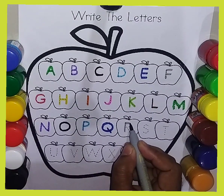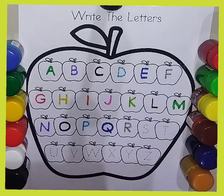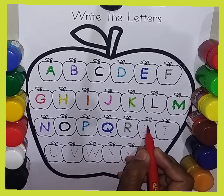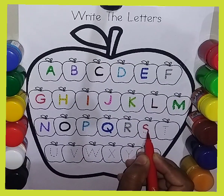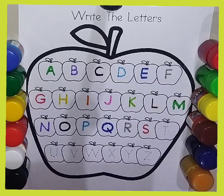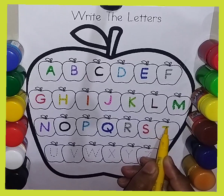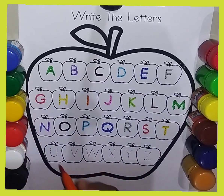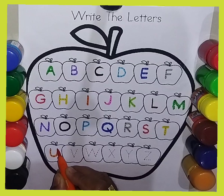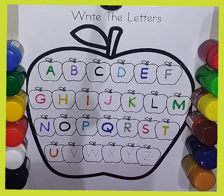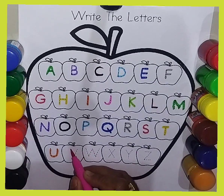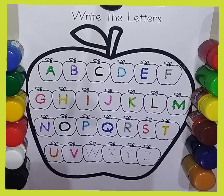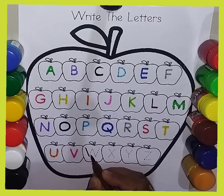R, R, R for radish. S, S, S for ship. T, T, T for temple. U, U, U for umbrella. V, V, V for van. W, W, W for watch.